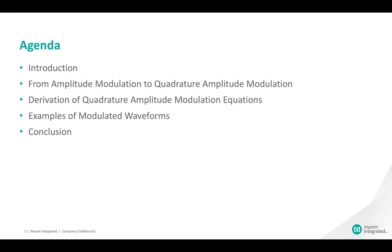This tutorial is divided into four sections. In the first section we'll review heterodyne amplitude modulation, or AM, and its shortcomings. Next we'll discuss quadrature amplitude modulation, also referred to as QAM, and we'll take a look at the advantages of QAM over AM. Then we'll see how the QAM equations can be derived and generalized. Finally we'll look at some examples of QAM modulated signals.